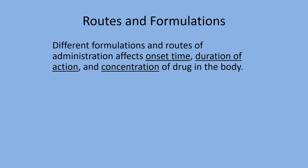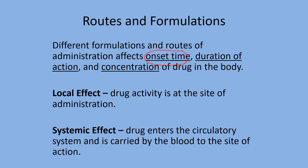Onset time — how fast it takes for the drug to start working — can be manipulated by changing the routes and formulation. Duration of action — how long the drug works — and how much of it enters the body can be changed based on the route we choose and the dosage form. Local effect means the drug will only work at the site. Systemic means it goes throughout the whole system — it enters the bloodstream, and wherever the blood goes, the drug is carried there as well.